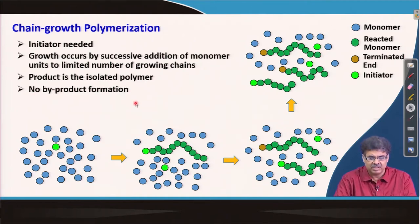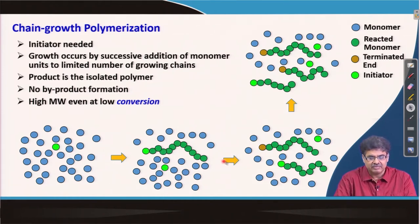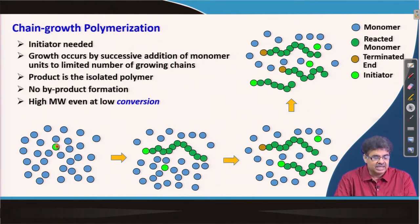Generally, no byproduct formation occurs, and high molecular weight polymer chains can form at low conversion. Conversion is the percentage of monomers which have reacted. Even when a small fraction of monomers has reacted — low conversion — high molecular weight chains already exist, because the rate of polymerization for radicals or cations is very fast. So even at low conversion, we get high molecular weight polymer chains.